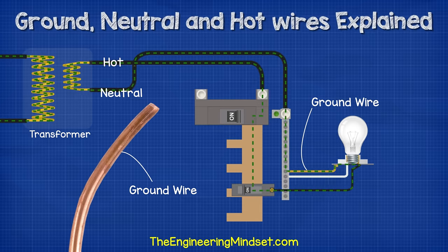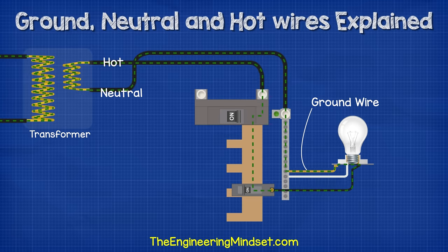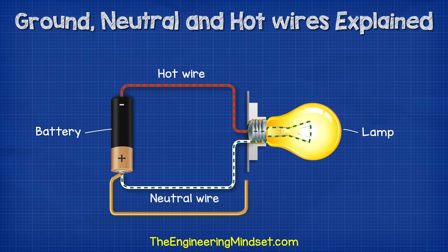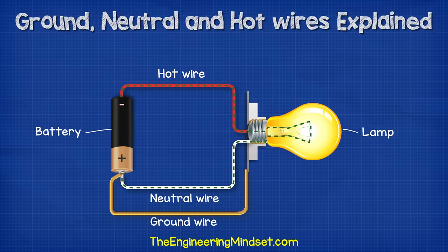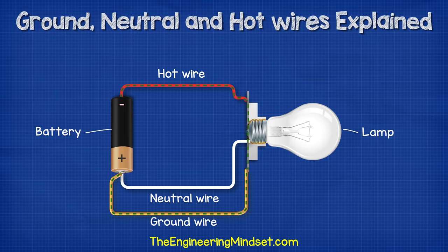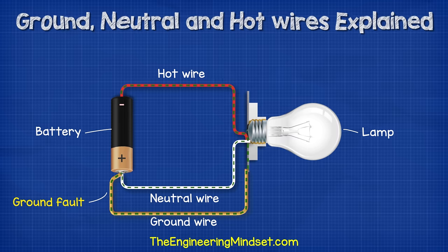The ground wire in most cases is a bare copper wire — uninsulated, but in some cases covered with green insulation. This wire has a very low resistance, so electricity will prefer to travel along it because it's easier and can get back quicker. Going back to the simple circuit with a battery and a lamp: if we run another wire from the positive terminal over to the lamp and connect it to the metal of the lamp holder, this is effectively our ground wire — it's not being used to carry electricity. If the hot wire touches the metal casing, the electricity will now flow through the ground wire instead. This is called a ground fault — when electricity finds a way to leave its circuit and return to the source through a different way than its neutral wire.